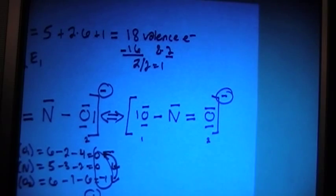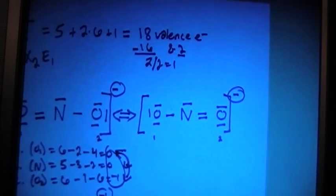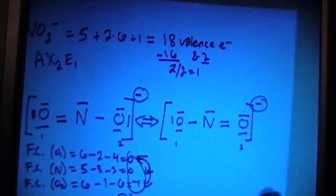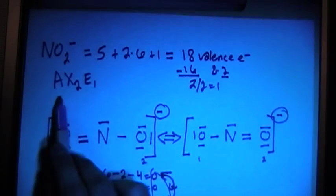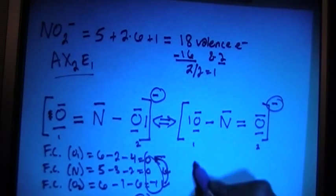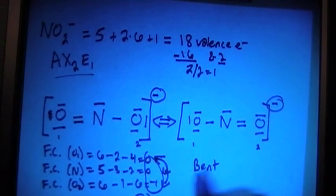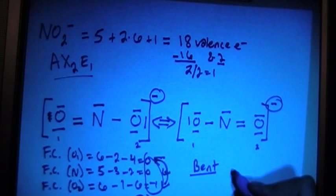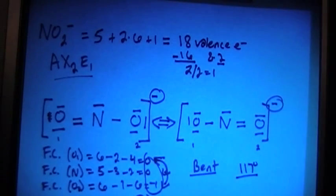Okay, so now we can go ahead and talk about the shape, which, since it was AX2E1 up here, that's going to be a bent shape with angles of 117 degrees between the bonds.